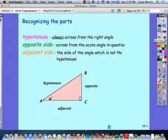Do you recognize these different parts of a triangle and their definitions? So we've got hypotenuse, always across from the right angle. Our opposite side is across from the acute angle in question. And then the adjacent side is the side of the angle which is not the hypotenuse.